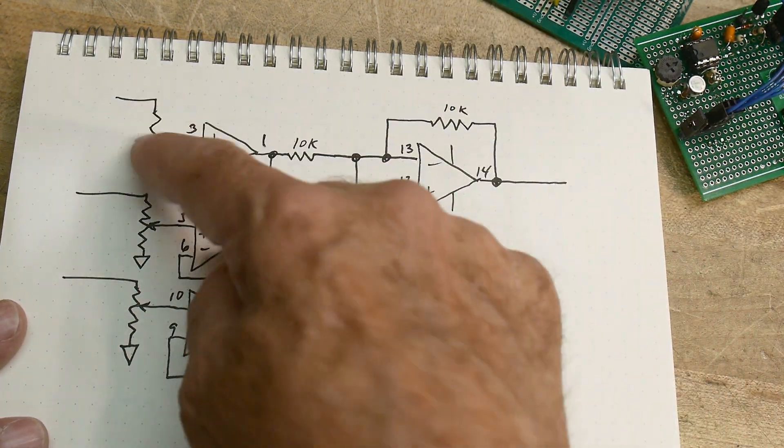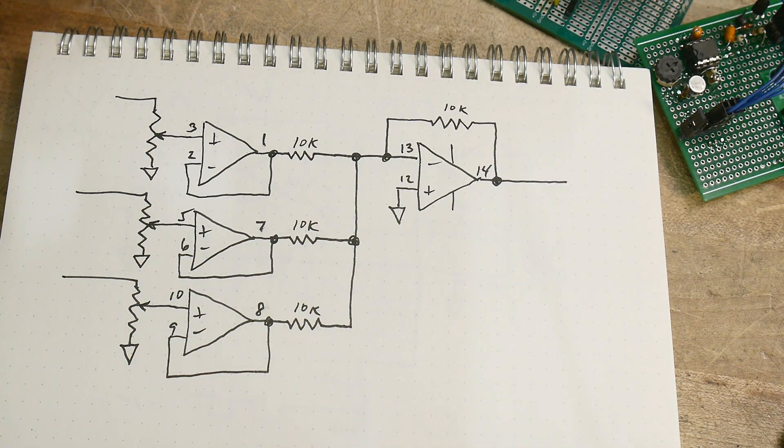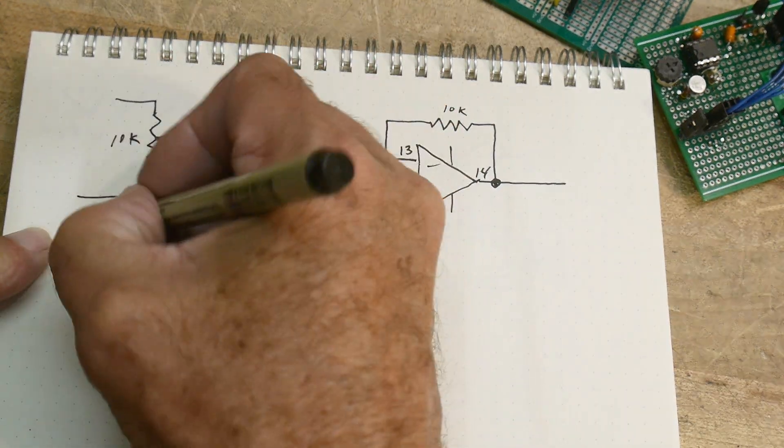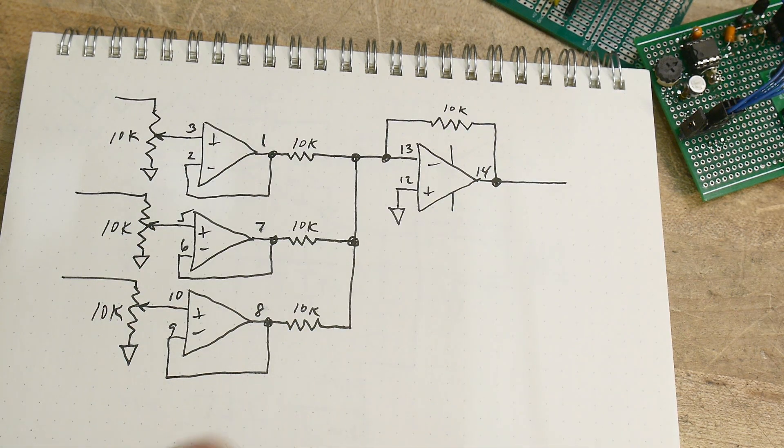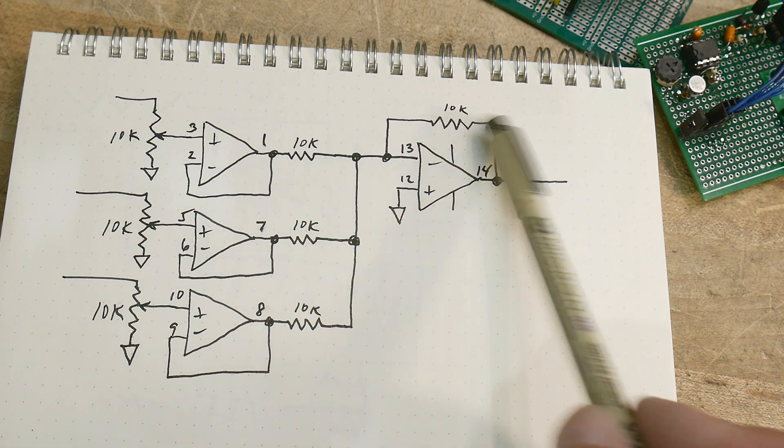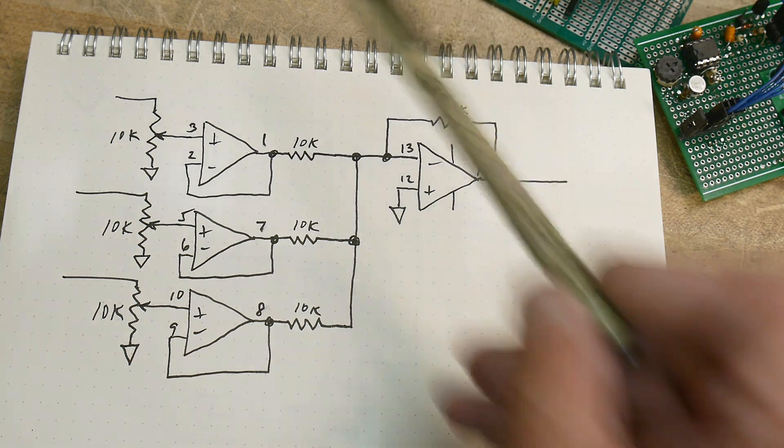We're going to have 10k potentiometers. Let me write it on here so it'll be complete, I won't forget. 10k, 10k, 10k, and they'll get buffered, and then they'll go into a summation amplifier. So each one will have a weighting factor of one, so gain of one, gain of one, gain of one.